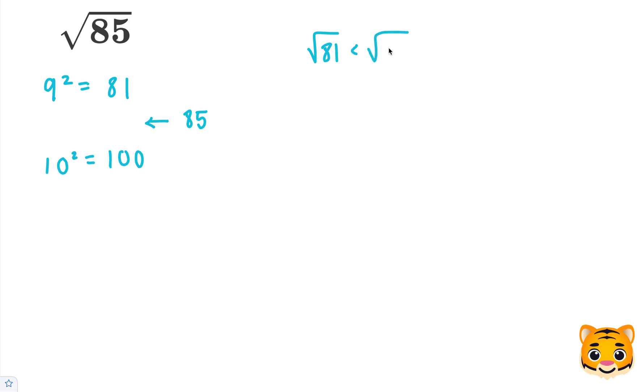The square root of 81 is less than the square root of 85, which is less than the square root of 100. We can write this because 81 is less than 85, which is less than 100.